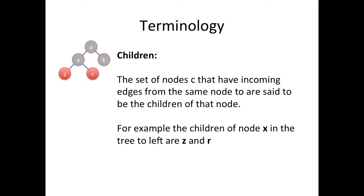A children. So if you have any node if you look at all the lines that lead out of the node to other nodes those nodes that they lead out of are called the children. So we say the set of nodes C have incoming edges from the same node are said to be the children of that node. So children is a relational description. When you talk about the children of X you're talking about the relationship between X and its two children.